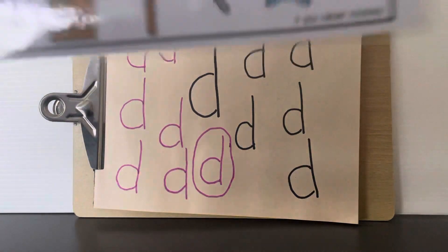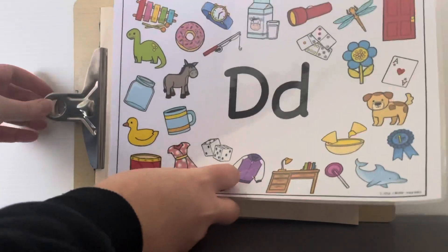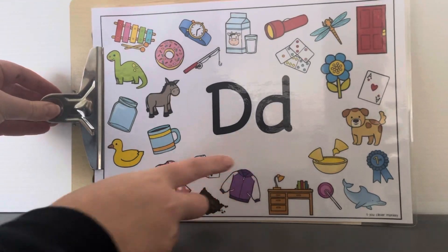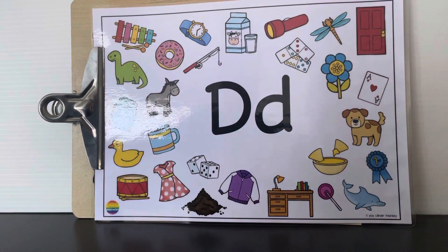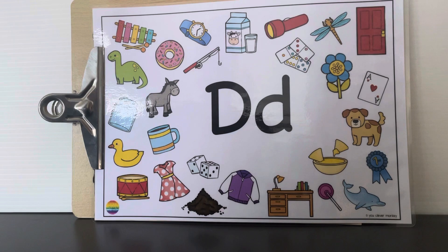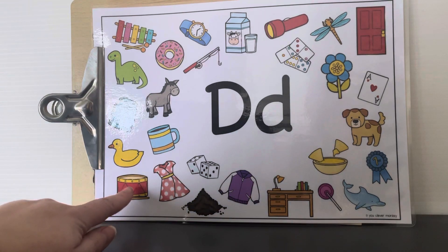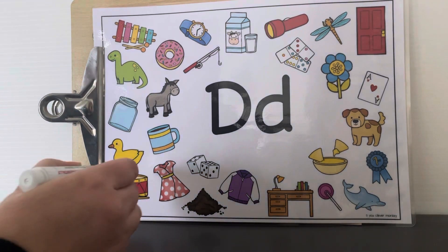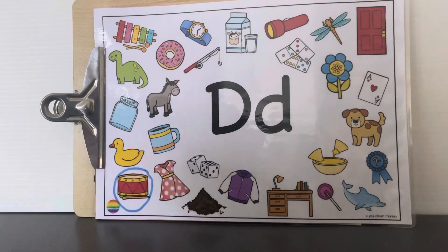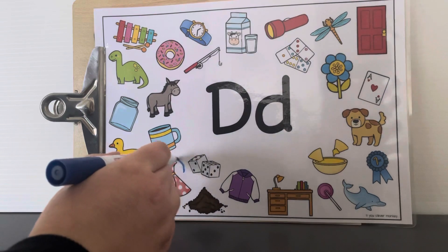Let's have a look at some pictures to see if we can find some things that start with D. What can we see in this picture? Drum, D. Drum starts with D. And a dress starts with D.